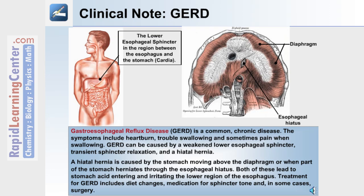Here's a clinical note on GERD, or gastroesophageal reflux disease. GERD is a common chronic disease, and symptoms include heartburn, trouble swallowing, and sometimes pain when swallowing. It can be caused by a weakened lower esophageal sphincter, a transient sphincter relaxation, and a hiatal hernia. A hiatal hernia is caused by the stomach moving above the diaphragm or when part of the stomach herniates through the esophageal hiatus, leading to stomach acid entering and irritating the lower region of the esophagus. Treatment for GERD includes diet changes, medication for sphincter tone, and in some cases surgery.